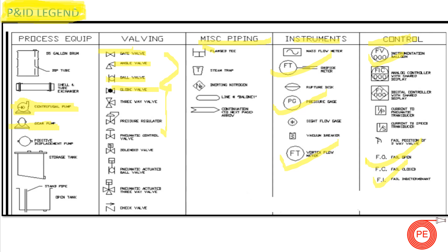All the things that will be captured in a P&ID are shown in terms of symbols, and all these symbols will be standardized for P&IDs using this type of legend. Legends vary from company to company or from designer to designer, so symbols vary from organization to organization, but more or less these symbols can be easily understood because there are very few changes when reading a P&ID from one engineering company to another.